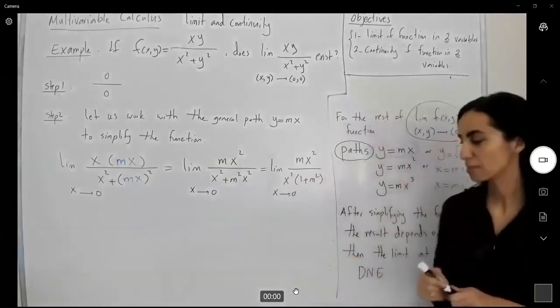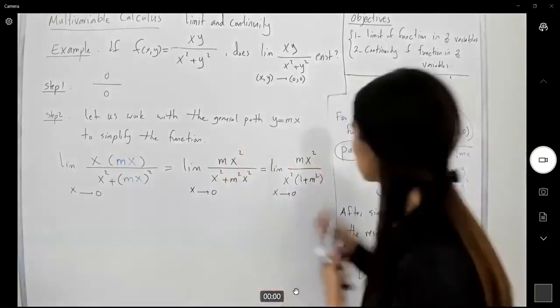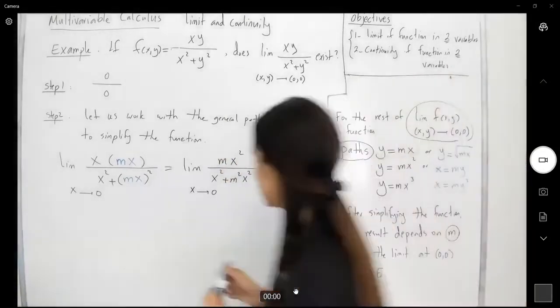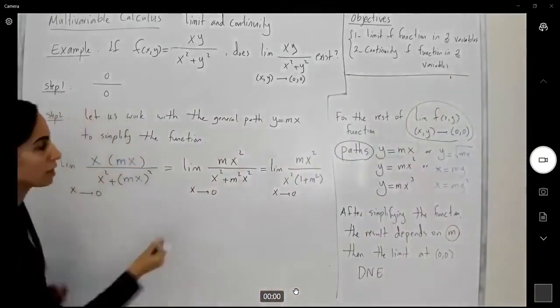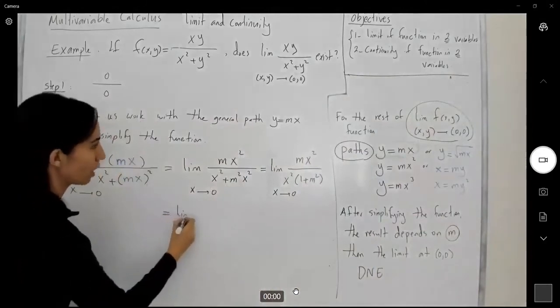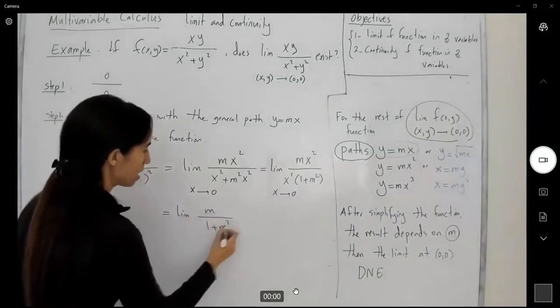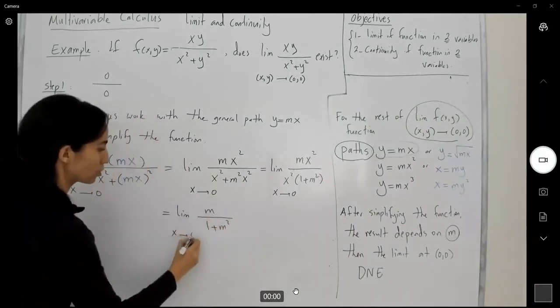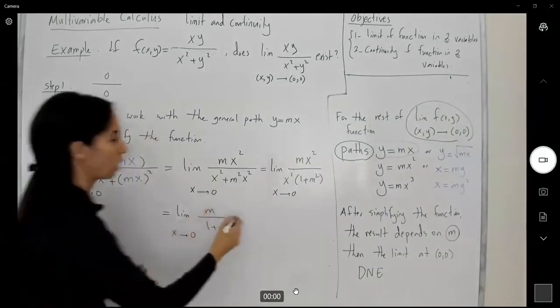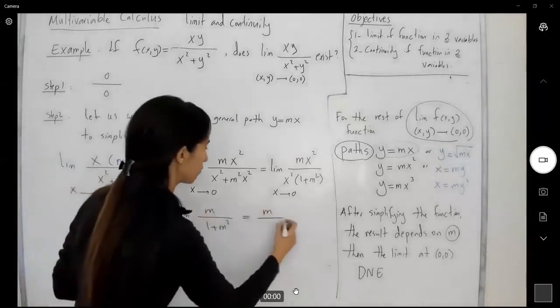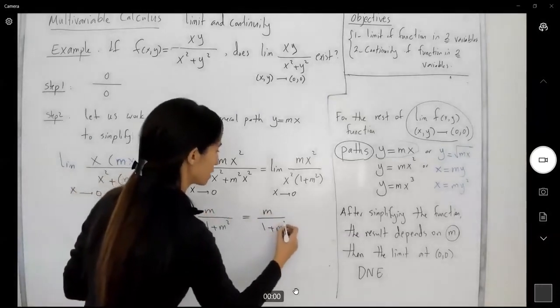Of course, I can simplify this. x squared cancels out. And here you have the limit of m divided by 1 plus m squared as x goes to zero. So this is just a constant, m over 1 plus m squared.